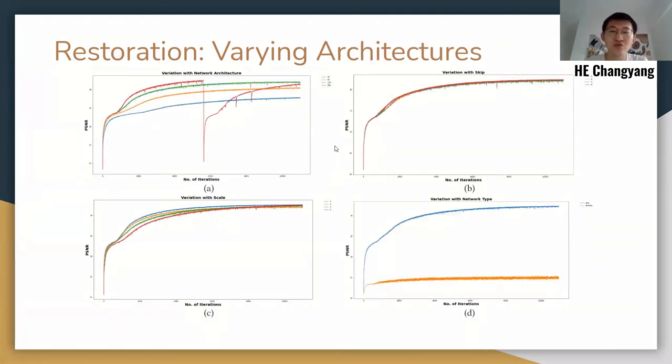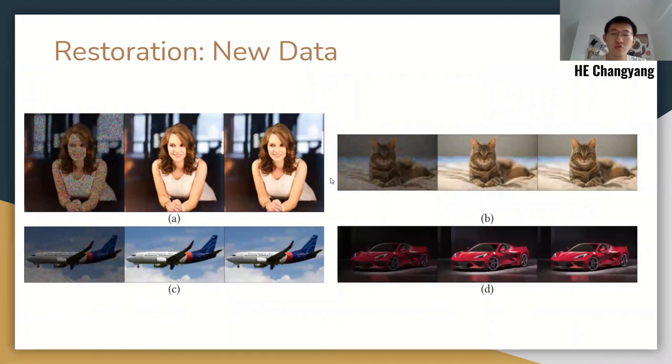We also vary architectures to test the performance for restoration. Larger models also generate better results, but they have the risk of instability. Unlike other tasks, skip and scale has little impact on the performance. Skip model, though with a simple structure, also has a much higher PSNR compared to ResNet. We test whether restoration can generalize to other settings using four additional RGB examples, including human, cat, plane, and car. Basically, the experiment result indicates a substantially good ability to restore different kinds of images.